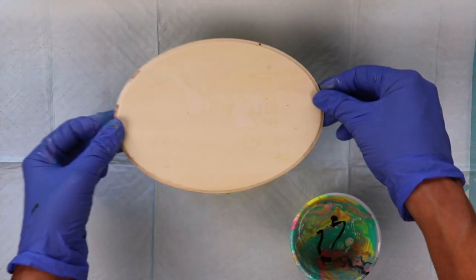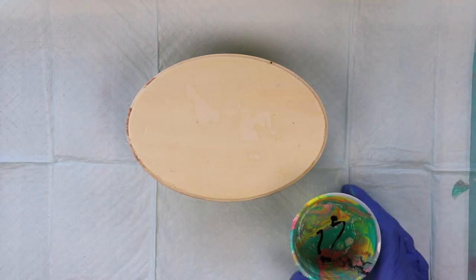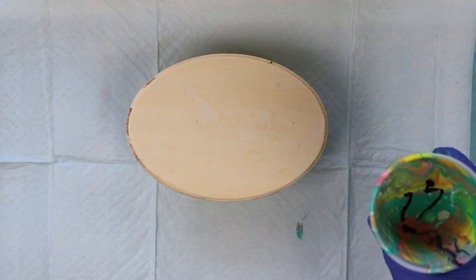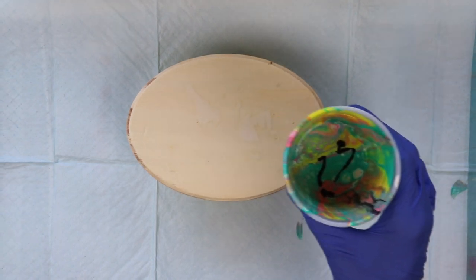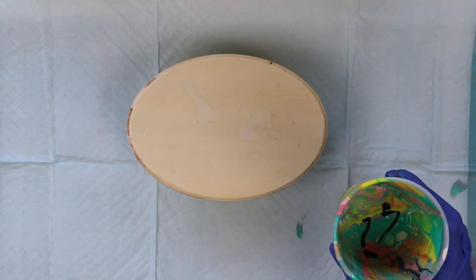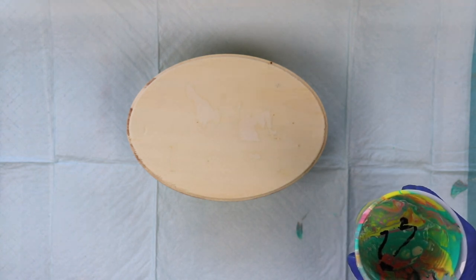I have some pastel colors in this cup here that was left over from another paint pour that I did earlier on some tiles. So I thought I would just go ahead and use it up on this wooden plaque. Maybe paint something over it, use this as a background. So that'll be another future project for me.